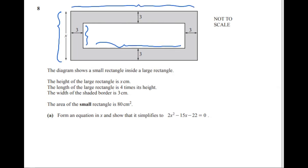The height of the large rectangle is x centimeters. The length of the large rectangle is 4 times its height, so it can be written as 4x. The width of the shaded border is 3 centimeters — this is given.